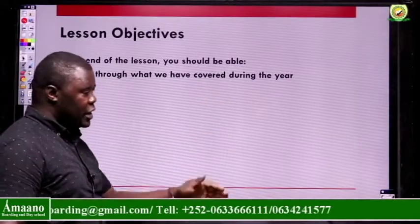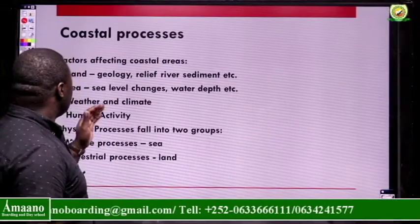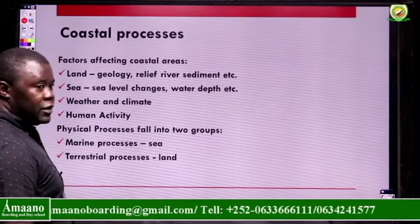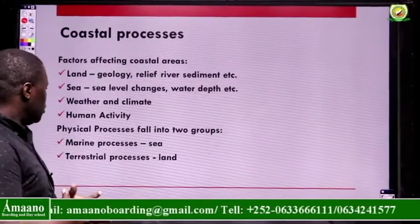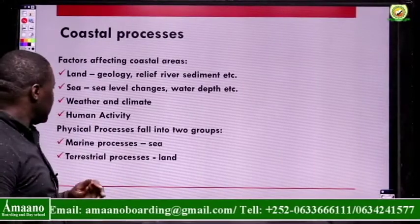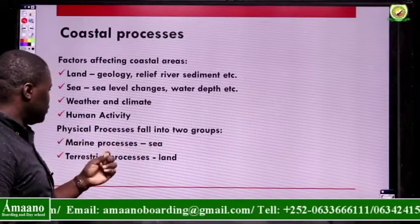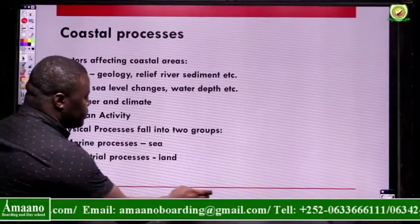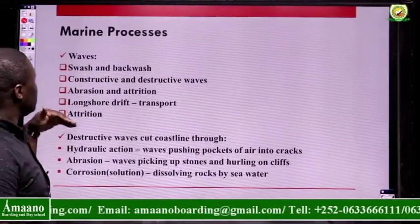We'll start with our objectives — just to run through what we covered during the year. We started with coastal processes and looked at factors that affect coastal areas, which are mainly land, sea, weather, and human activity. Physical processes are divided into two groups: marine processes, to do with the sea, and terrestrial processes, to do with land.